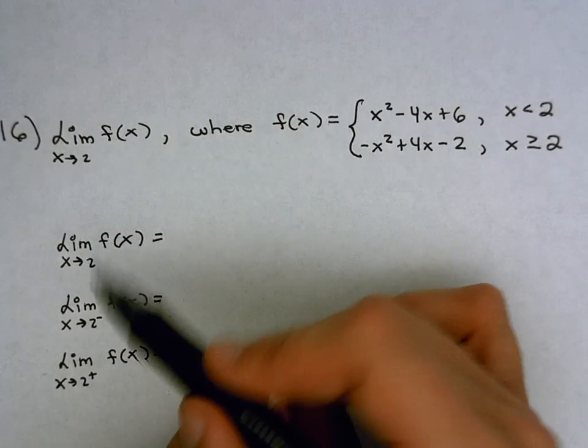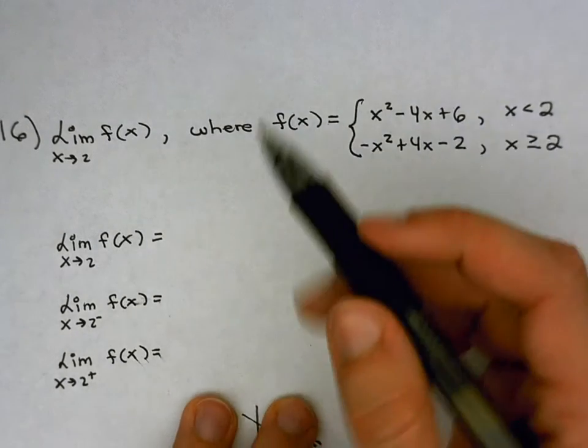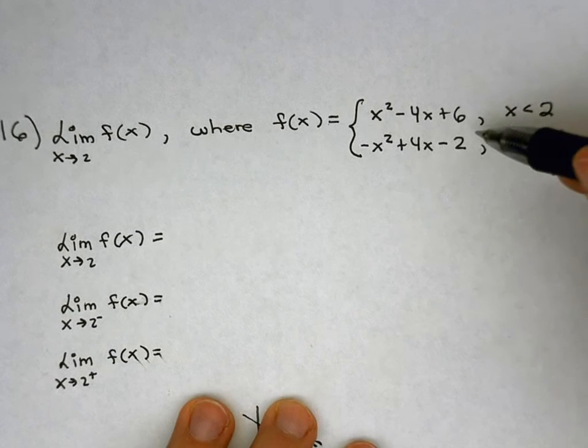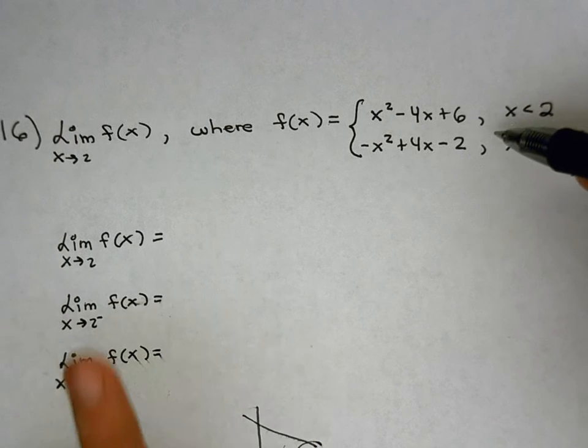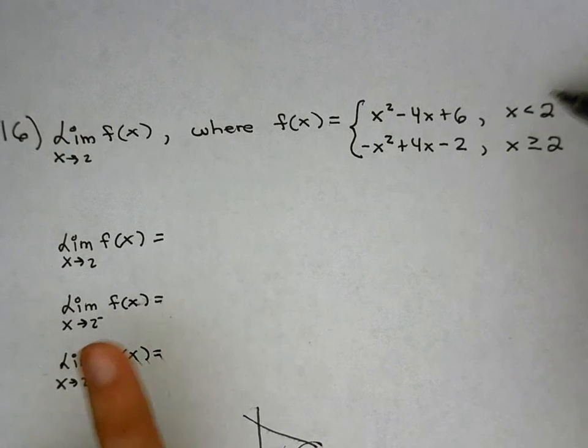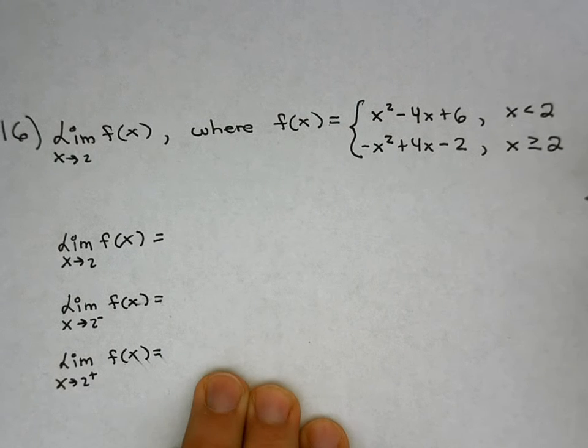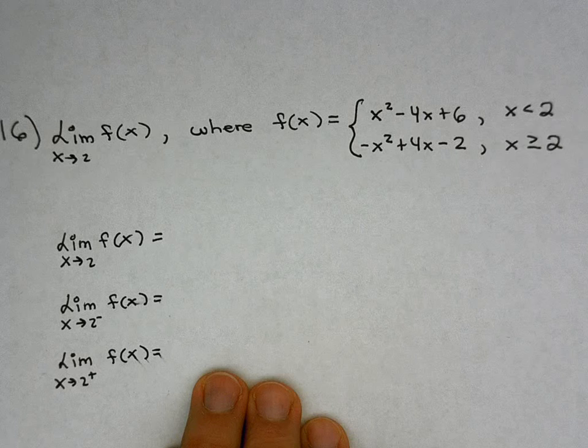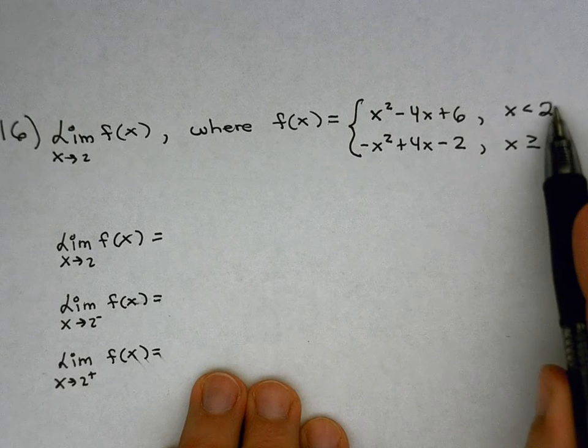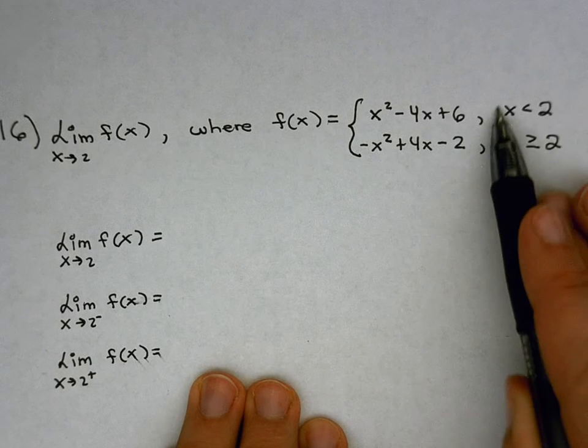Okay, so we have x approaches 2 from the left. I have to determine, well, which of these two pieces is x approaching 2 from the left? Well, left of 2 are values like 0 and 1, okay? So those are the values from which I will be coming. 0 and 1 are in this interval here, x is less than 2.